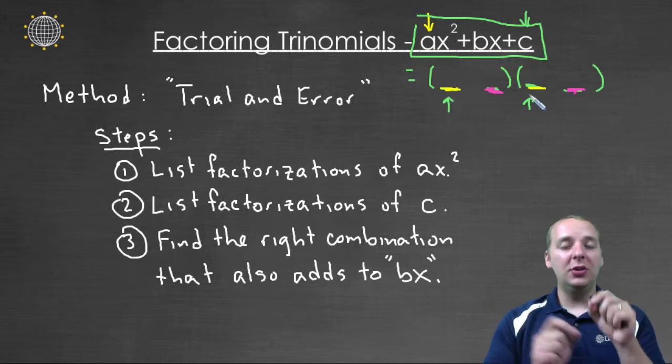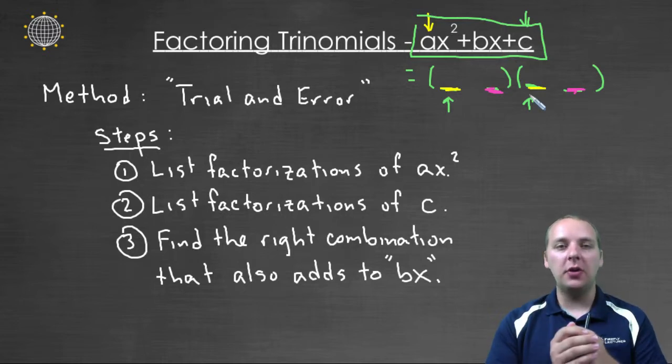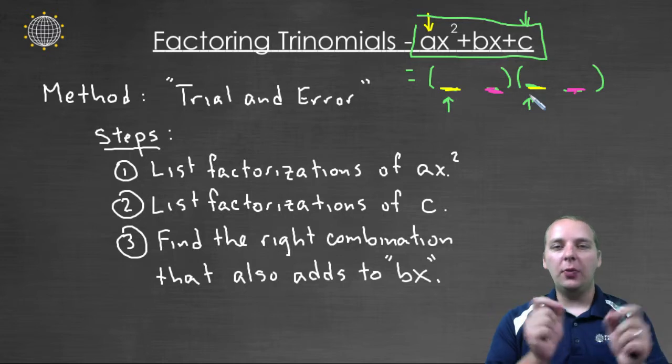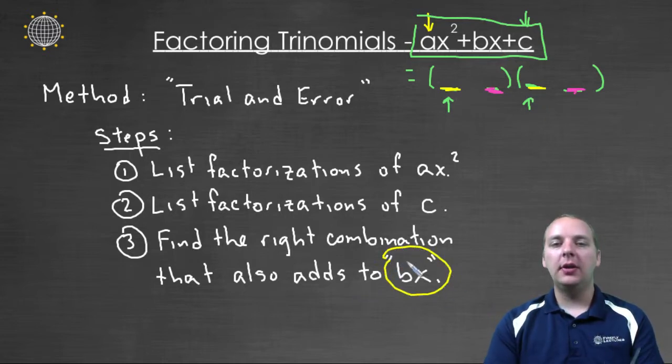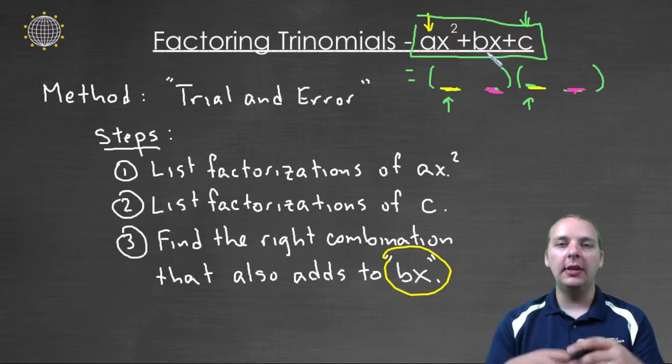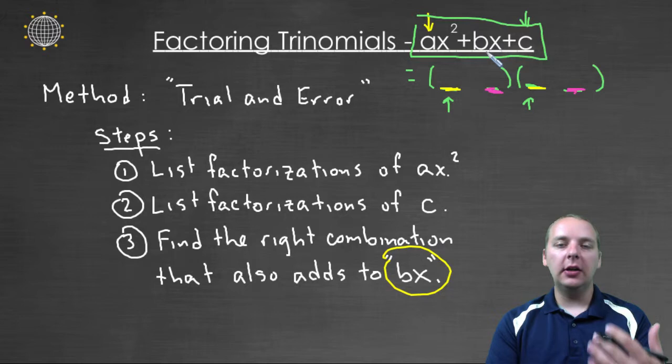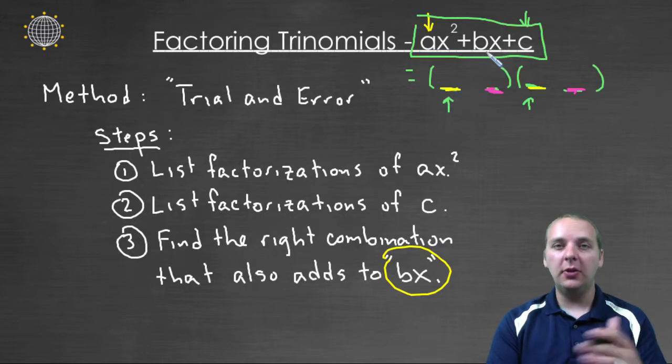The factorizations of a are possibilities for the first two slots. And then you just have to try different options. This is why we call it trial and error. Find the right combination that will also allow you to have those terms adding up to bx for the outer and the inner terms. So there is a little bit of guess and check to it, or trial and error, but in my experience this is the fastest way to do this.